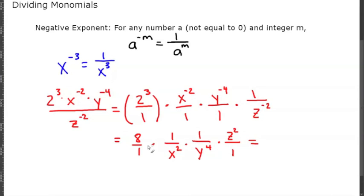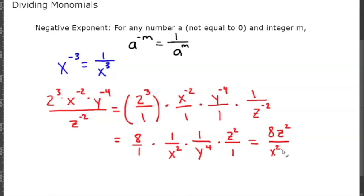Multiplying all this out, for our numerator we have 8 times 1 times 1 times z squared, which is just 8z squared. For the denominator we have 1 times x squared times y to the fourth times 1, which is just x squared y to the fourth. So our final answer is 8z squared over x squared y to the fourth.